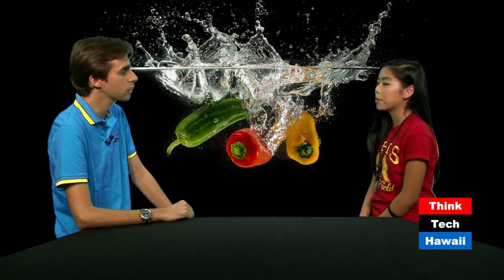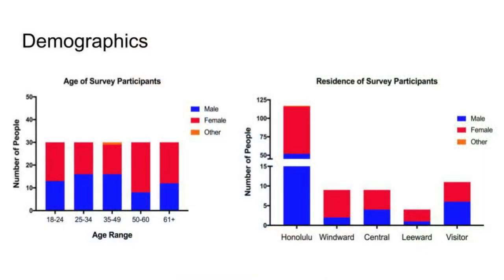I designed a survey of 10 questions and asked 150 people how much they knew about this disease. Looking at the demographics of the study, we surveyed 150 people with 30 people per age range. We were also able to get a generally even amount of males and females, and most of whom lived in Honolulu.